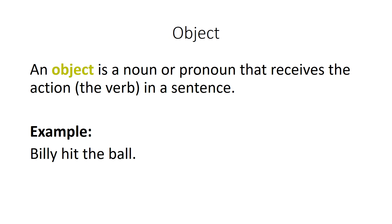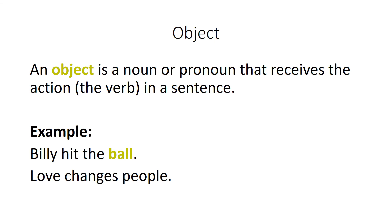An object is a noun or pronoun that receives the action of the verb in a sentence. It doesn't do the action, but the action affects it. So in the sentence 'Billy hit the ball,' ball is the object, because it's what's being hit — it's not doing the hitting. In the sentence 'love changes people,' people is the object because it's what's being changed — the changing is happening to the people.